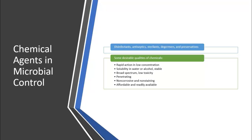We have talked about the physical methods till now. It's time to understand some of the chemical agents used for microbial control. Physical methods ultimately lead to protein modification, protein coagulation, protein damage, or DNA damage like radiation therapies. But chemical agents mostly target protein modification, dehydration, cell membrane destruction, and ultimately death.